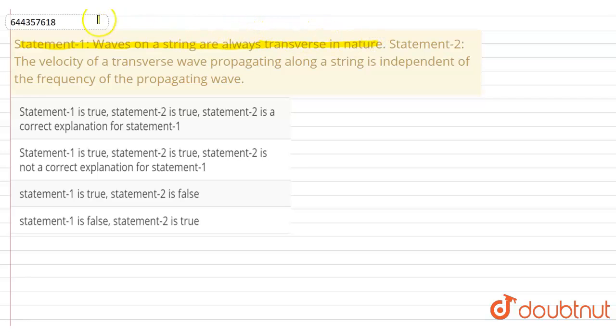So statement 1 is true, because let me show you in favor. Let's say this is a wave on a string. So, transverse wave is basically that wave in which particles oscillate perpendicular to the velocity of wave.